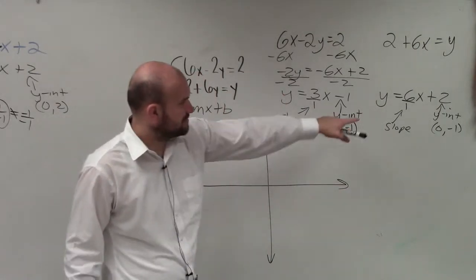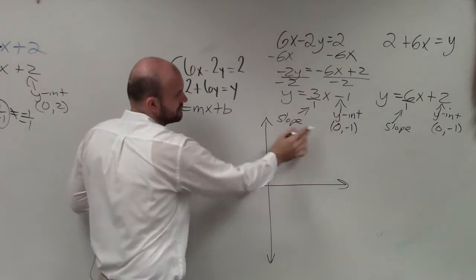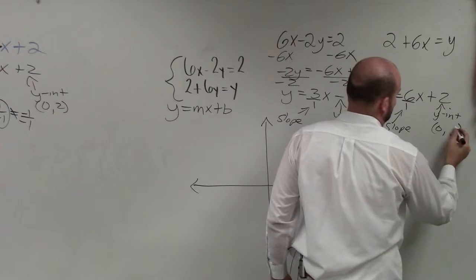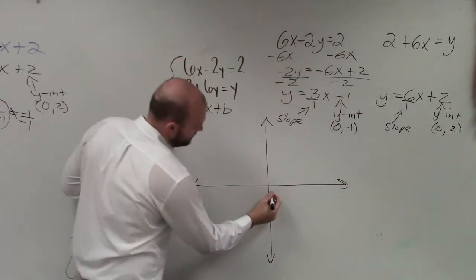So here, first one I do is I go to my, let's graph this one first. They both have this, what am I doing? All right, so this one has a y-intercept of negative 1.